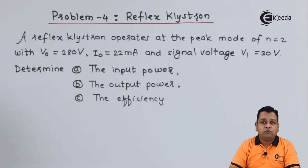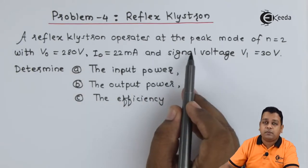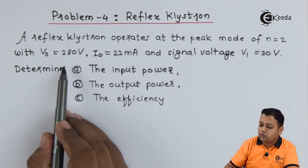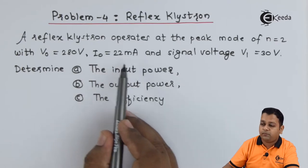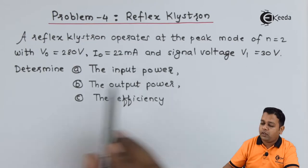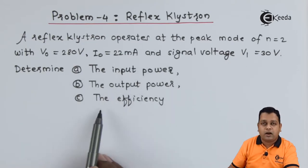Problem statement for reflex klystron is given as: a reflex klystron operates at the peak mode of n is equal to 2 with V0 is equal to 280 volts, I0 is equal to 22 milliampere and signal voltage V1 is equal to 30 volts. Determine input power, output power and the efficiency.